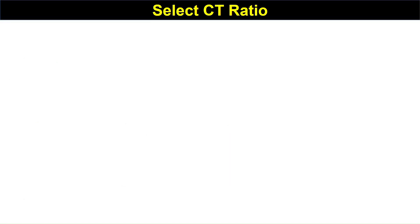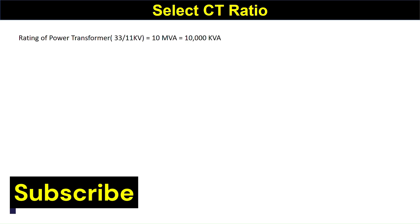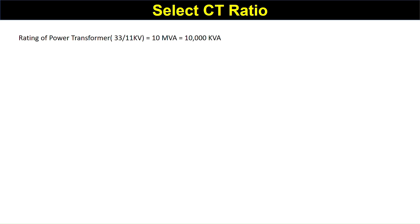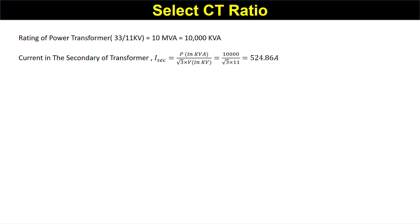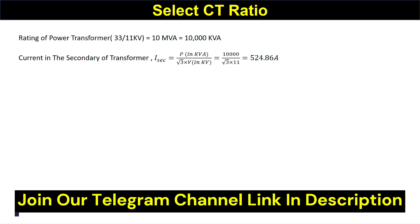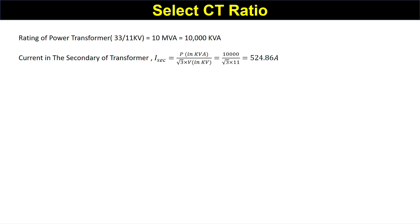First, we will discuss how to select the CT ratio. Suppose the transformer rating is 10 MVA, 33/11 kV. The current on the secondary side of the transformer is equal to the power capacity in kVA divided by root 3 into V in kilovolts. To find current on the secondary side, we take V as 11 kV, giving us 524.86 amperes.